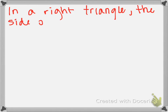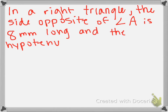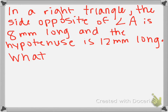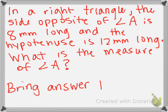In a right triangle, the side opposite of angle A is 8 millimeters long and the hypotenuse is 12 millimeters long. What is the measure of angle A? You are going to use the inverses like we just learned. Please bring your answer to class.